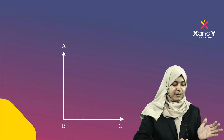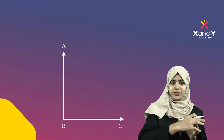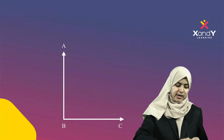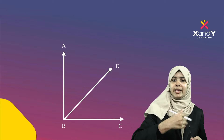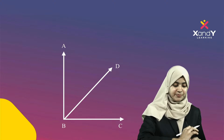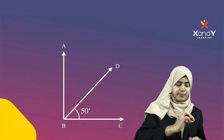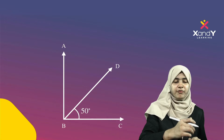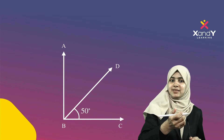Here we have points A, B, C. There is a line AB, and there is a ray at point B. There is a perpendicular. I have to add a ray BD. There is also a ray at B. Angle CBD is 50 degrees.